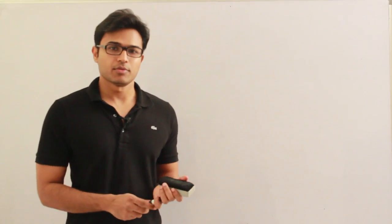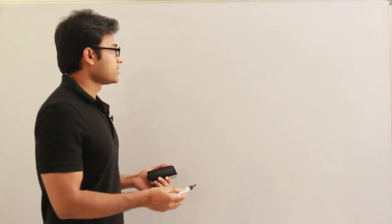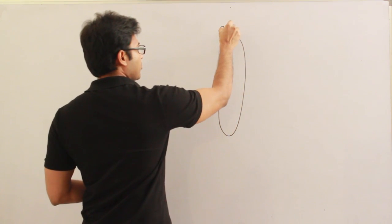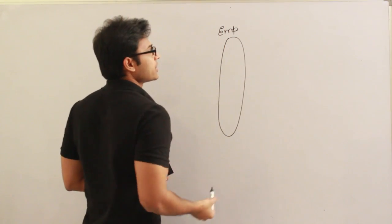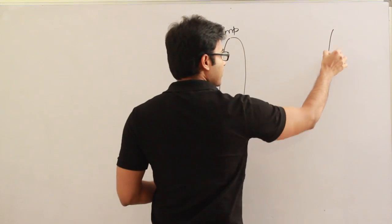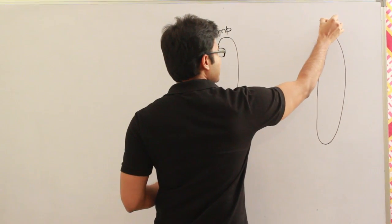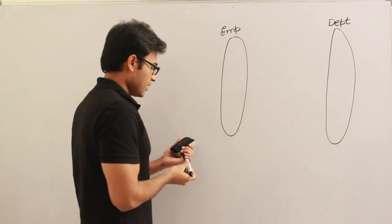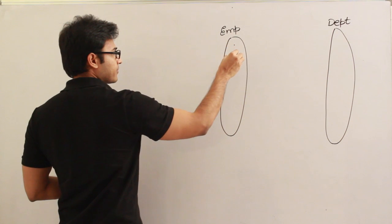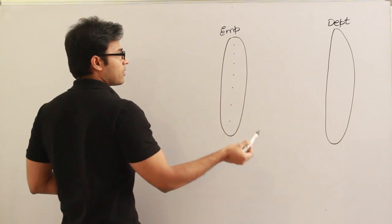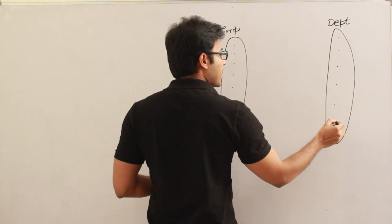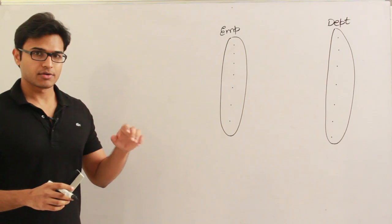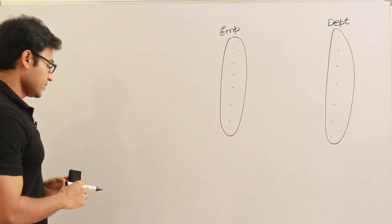Let's see one more type of relationship possible among entities. There is again an employee entity type and employee entity set, and a department entity type and department entity set. There are many employees and many departments. From the verbal description of the requirements, let's say you have inferred or jotted down these few requirements.